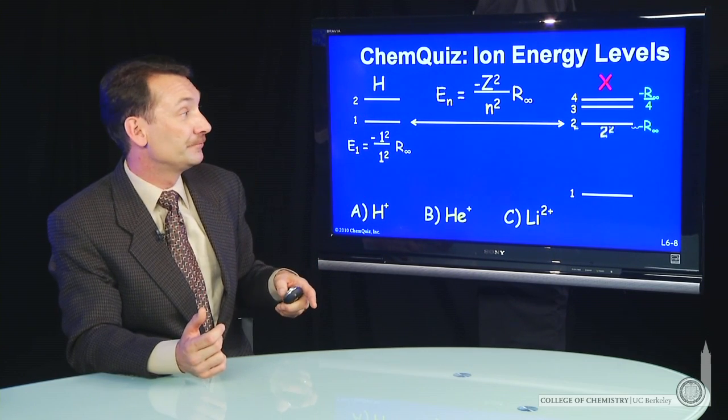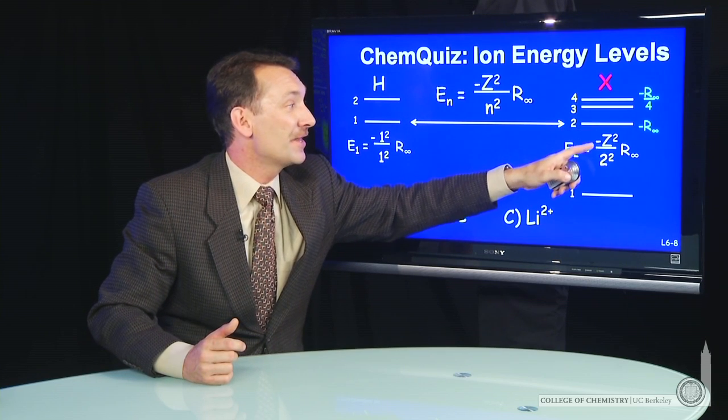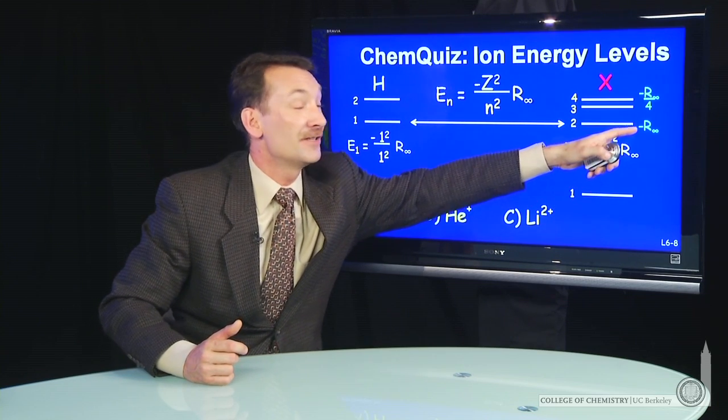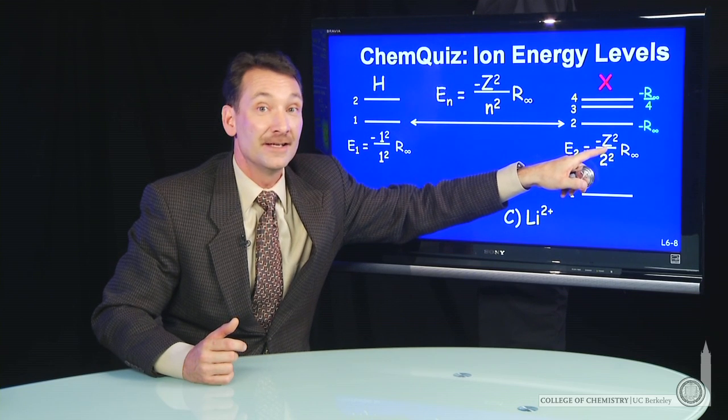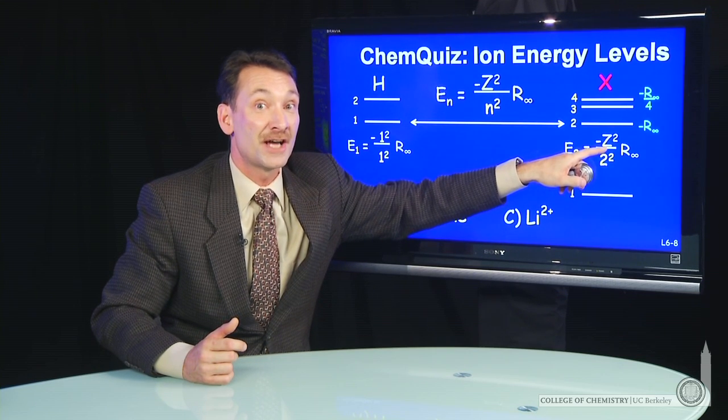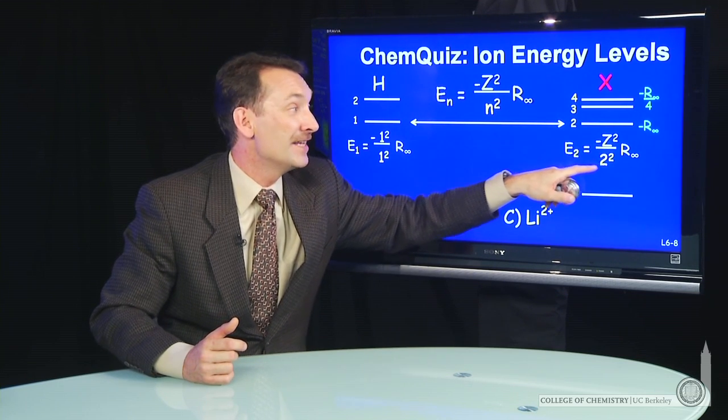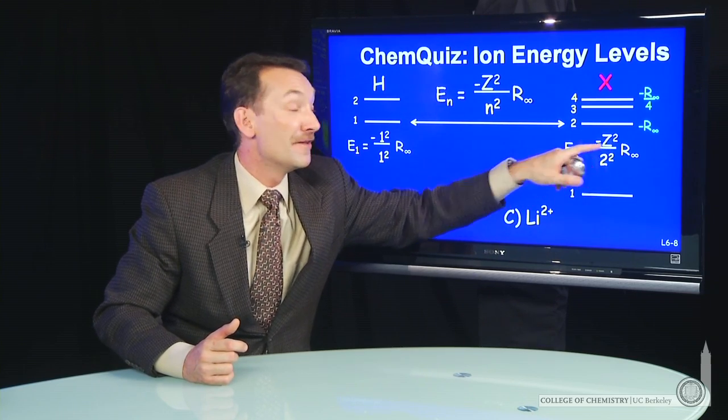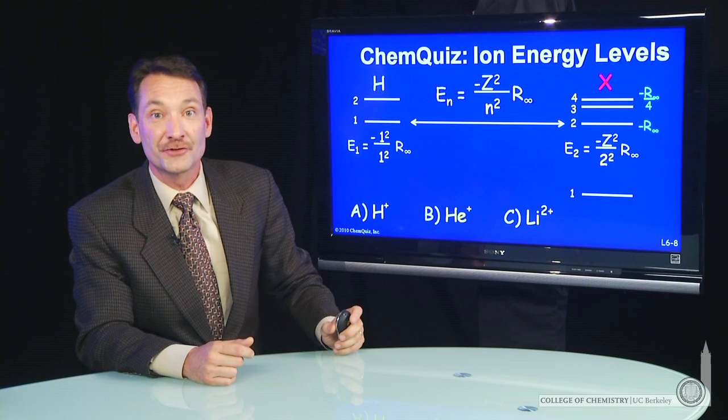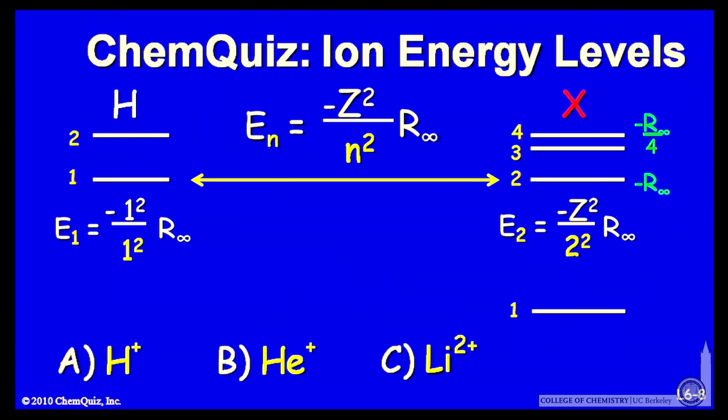For this unknown ion, it has to be something over something to still give me -R∞. The value of Z is undetermined because we don't know which ion it is, but the value of n is 2. To make this equal -R∞, the value of Z must also be 2. So that determines what the ion is.